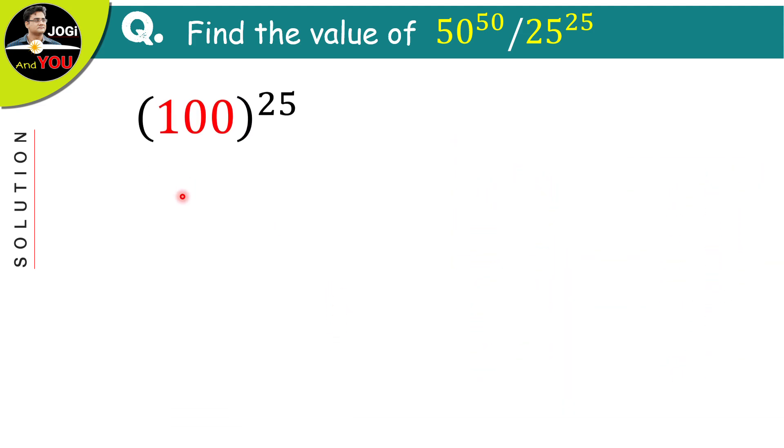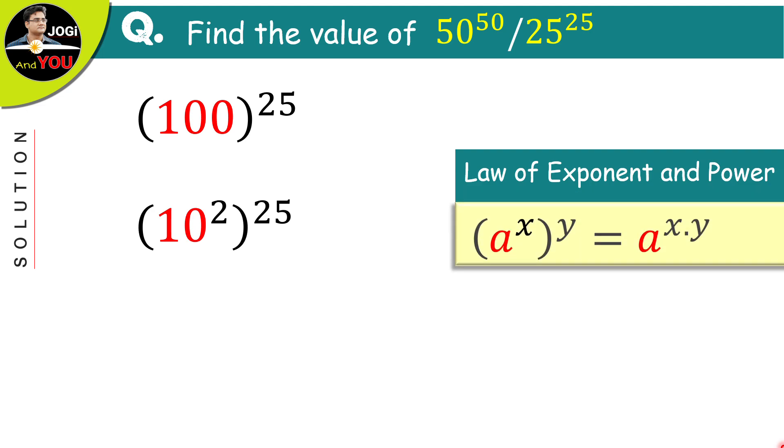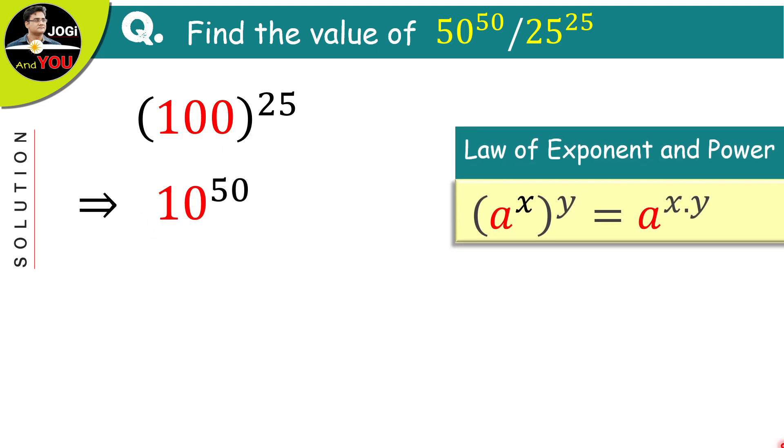We can write this 100 as 10 squared. Now, again we have another property in which if we have a power on a base and again power on all of it, then multiply both the powers and put them together on the same single base. Just like this. Now, do the same and we have 10 to the power of 2 multiplied by 25. And after then, we have 10 raised to the power of 50.